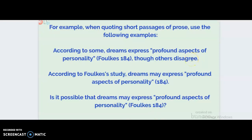We'll start with introducing a quote. In this particular example, the writer writes 'According to some, dreams express' — and here comes the quotation — 'profound aspects of personality.' Then the writer has inserted the citation: the author's name is Folks, the quotation came from page 184, and it ends with 'though others disagree.' In the next example, it's 'According to Folks' study, dreams may express profound aspects of personality.' Here the writer placed the citation in the proper area but with just the page number, because the writer already introduced the author. The first one has the author's name in the citation; the second one does not, because the author is introduced in the sentence.